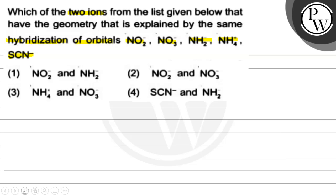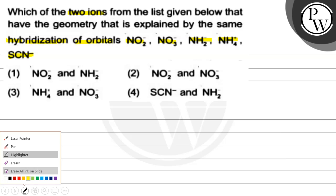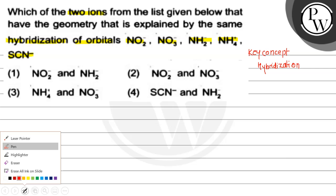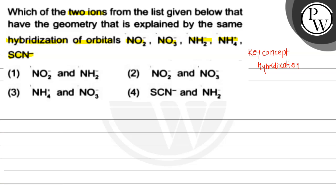So in this question, what is the main key concept? The key concept of this question is hybridization. Before finding out the hybridizations, we write the formula of hybridization.